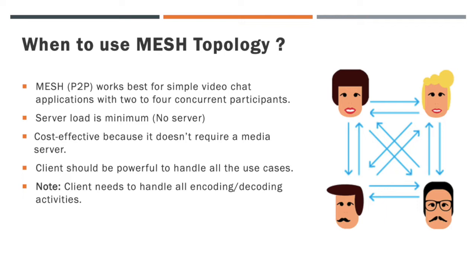Let's see when we have to use mesh topology in a conference call. We already know that mesh is a peer-to-peer WebRTC connection. Mesh works best for simple video chat applications with two to four concurrent participants. We are not using any complex server in mesh, so the server load is very minimal. If you are looking for a very cost-effective topology, then you can go for mesh. But the client should be powerful enough to handle all use cases, as all encoding and decoding activities need to be handled on the client side. Mesh is not recommended for large group participant calls.